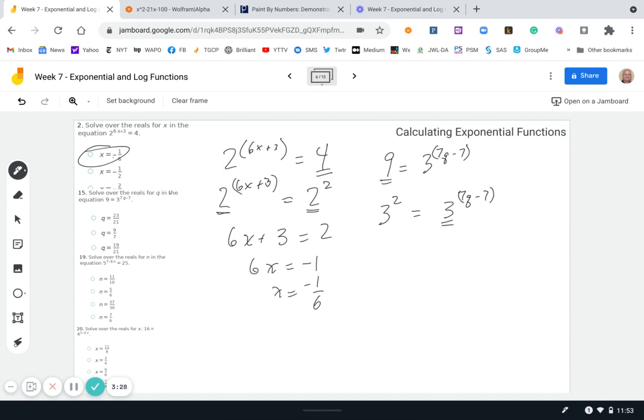And then we can say, since we have the same base, we can just compare and create an equivalence between the powers. So 2 equals 7q minus 7. Add 7 to each side, you get 9 equals 7q. And now you get 9/7 is our value of q, which is here.